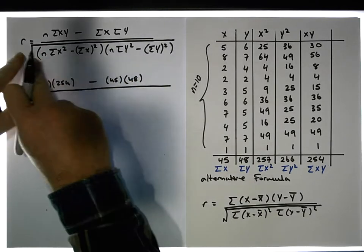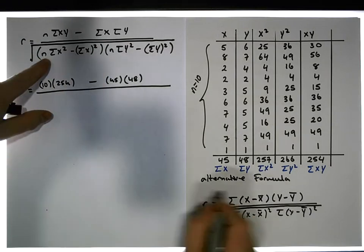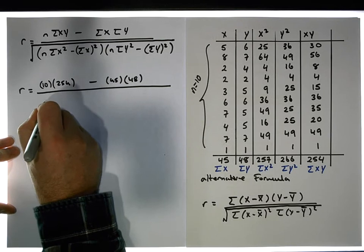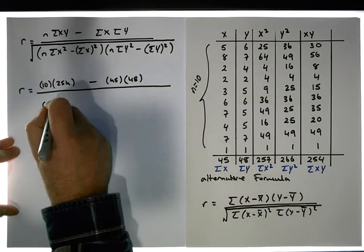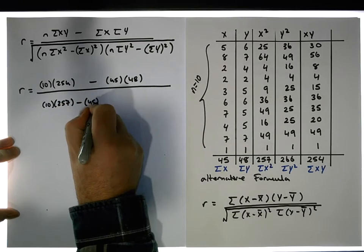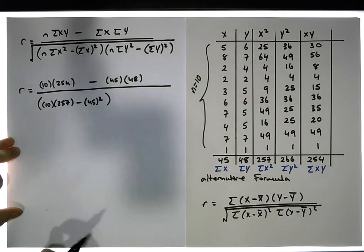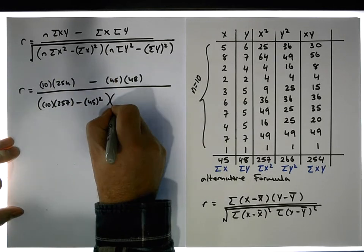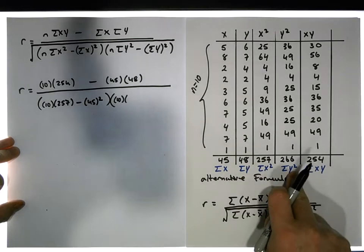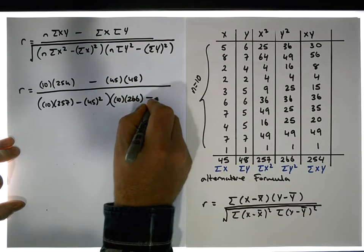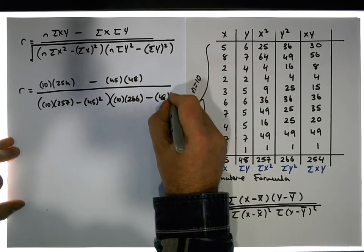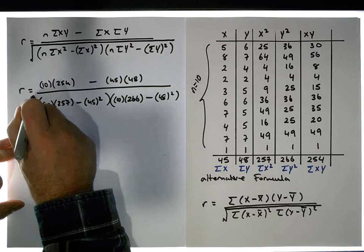The denominator has two factors. It's n, which is 10 — the number of observations — times the sum of the x squareds, which is 257, minus the sum of the x's, which is 45, and that needs to be squared. That's multiplied by 10 times the sum of the y squared values, which is 266, minus the sum of the y values — 48 — but that needs to be squared. And we take the square root of that entire denominator.